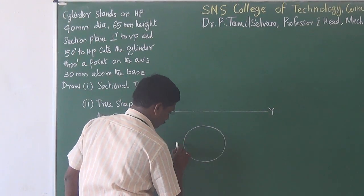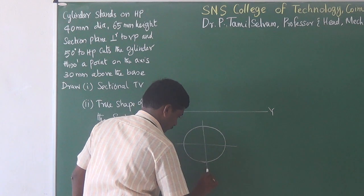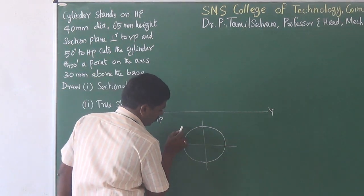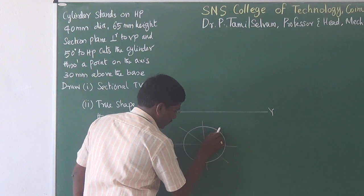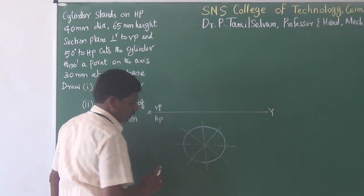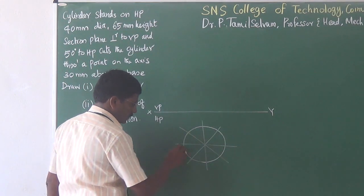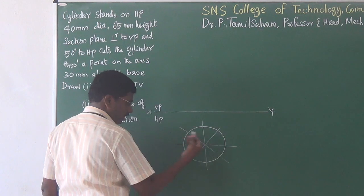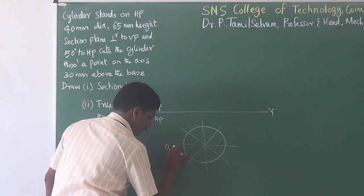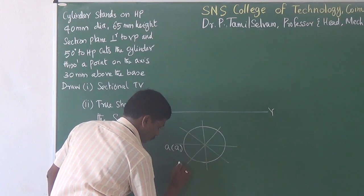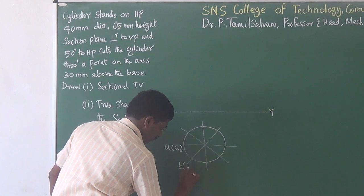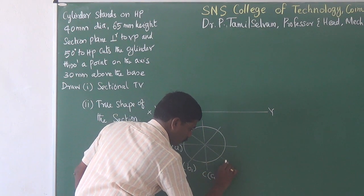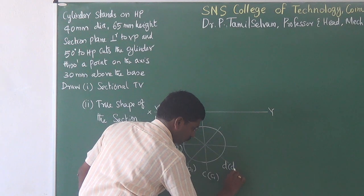A cylinder of 40 mm diameter has to be divided into 8 equal parts for easiness. These are all called generators. The top face corners are named as A, B, C, D and bottom face corners are named as A1, B1, C1, etc. Those are invisible. As usual, A, B, C, D are visible and A1, B1, C1 are invisible.